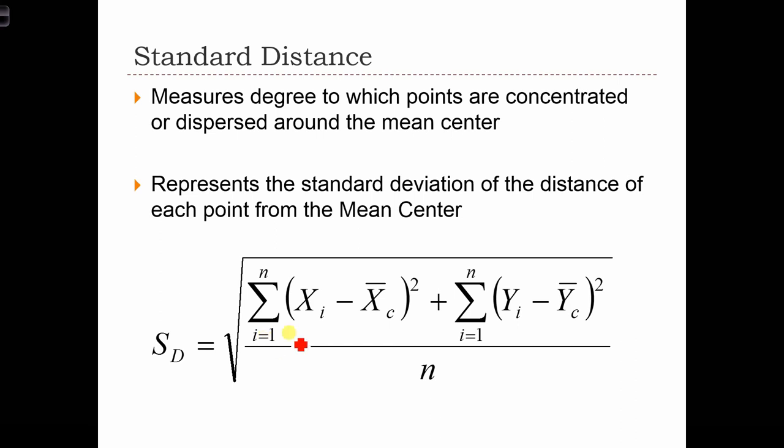If we look at the formula up top, we see that the left-hand side here is the sum of the square distances to the mean center in the x-direction. And this is the sum of the square distances in the y-direction. When we simply sum those two sums together and divide by n and take the square root, we get the standard distance.